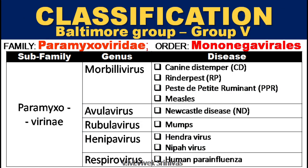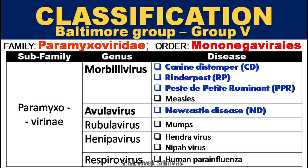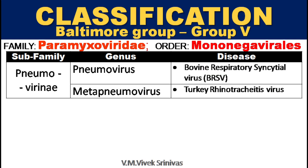Classification: Paramyxoviridae family, classified under the Baltimore Group 5, with the order Mononegavirales. Some of the veterinary important viral diseases under this family are canine distemper, rinderpest, and PPR under the genus Morbillivirus, and Newcastle disease under the genus Avulovirus. Other diseases under this family are measles, mumps, Hendrovirus, Nipah virus, human parainfluenza, bovine respiratory syncytial virus, and turkey rhinotracheitis virus.